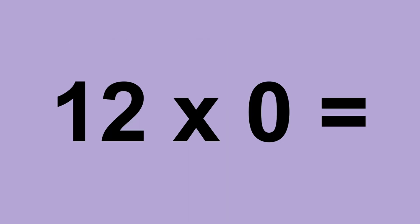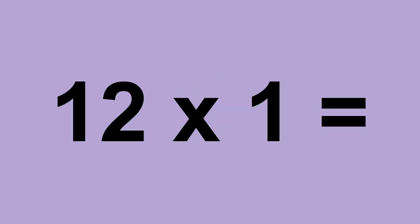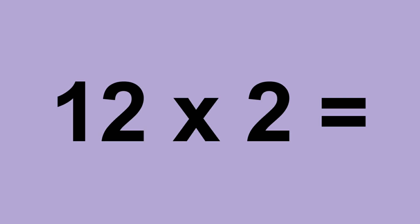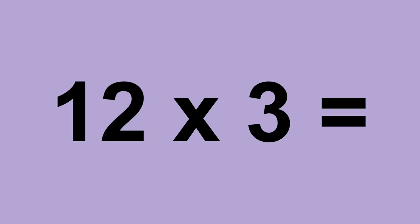Twelve times zero equals zero. Twelve times one equals twelve. Twelve times two equals twenty-four. Twelve times three equals thirty-six.